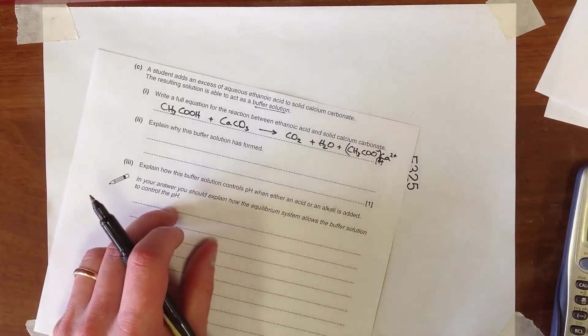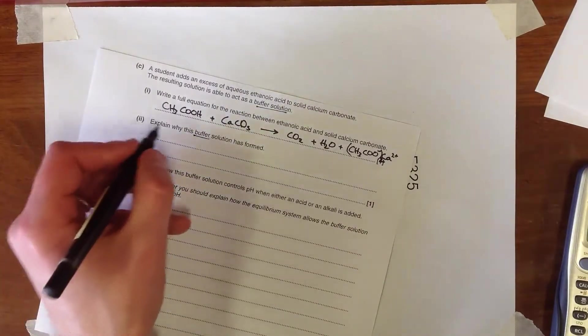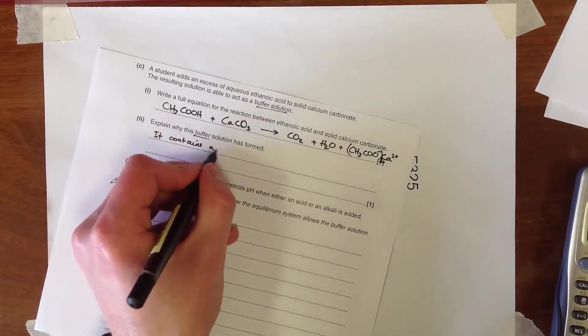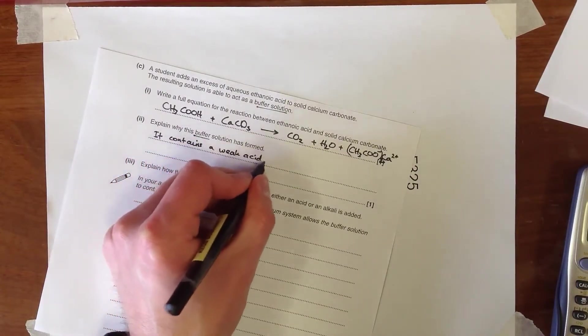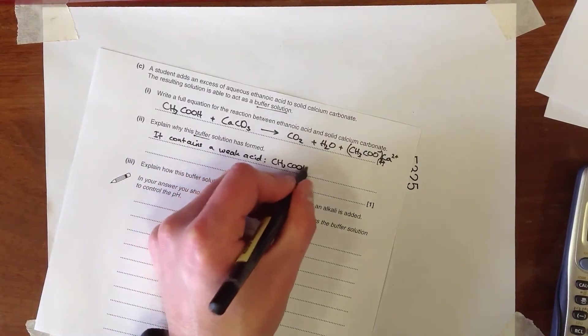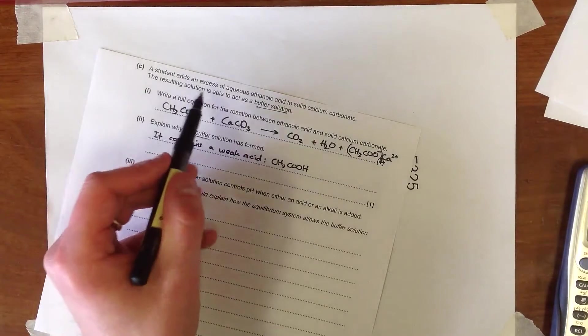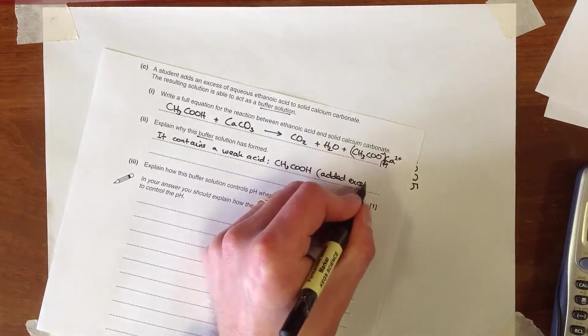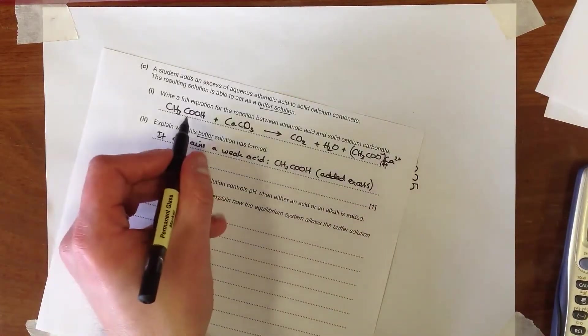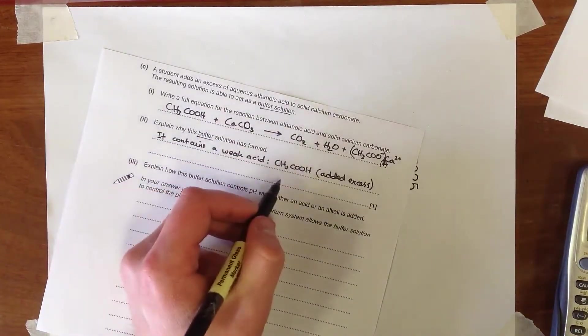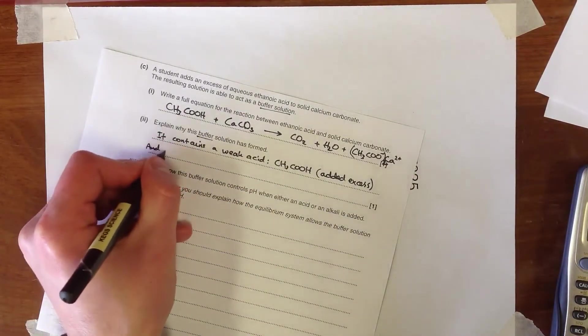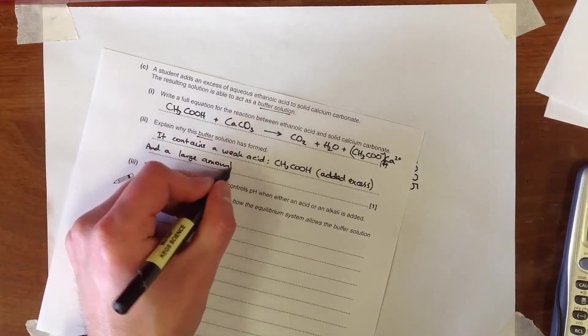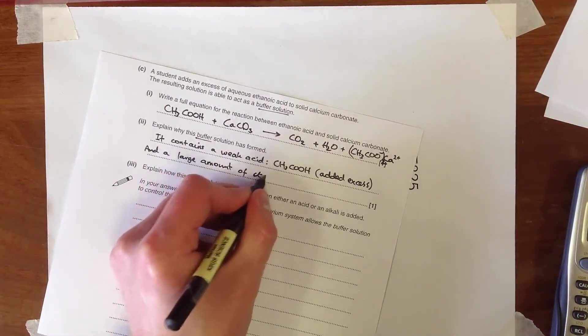Explain why the buffer solution is formed. Now remember, a buffer must contain a weak acid. And the reason we know that is because we've added an excess of this. Added excess. So we know that all the calcium carbonate's reacted, but there's an excess of this around, and so we know that it contains a weak acid. And a large amount, or a similar amount, of its conjugate base.